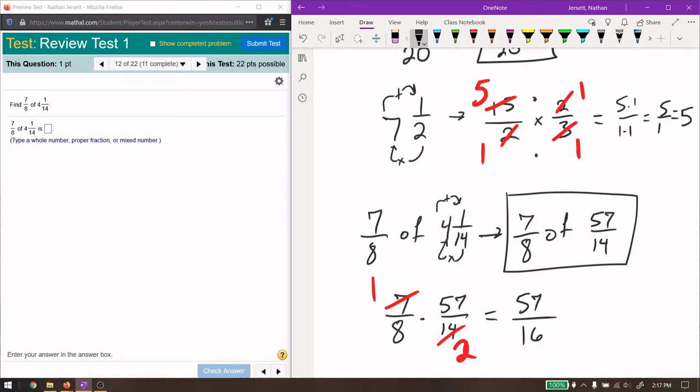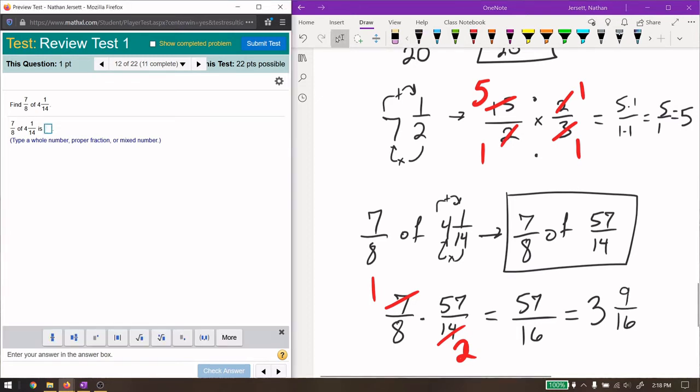Reading the blue type here, we have type a whole number, proper fraction, or mixed number. This is an improper fraction. We need to make it into a mixed number. How many times can 16 go into 57? It can go in there three times evenly. Three times 16 is 48. So 57 minus 48 is, 2 on 7 is 9 over 16. Give me 3 and 9 sixteenths.